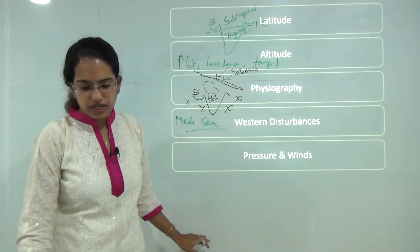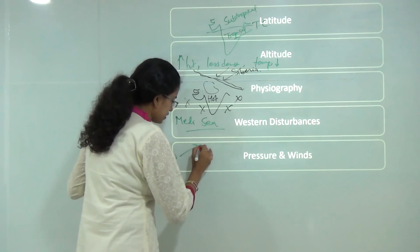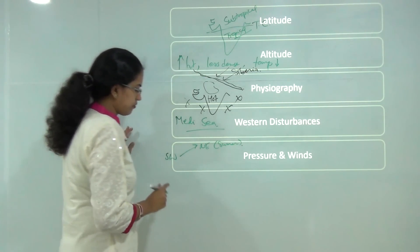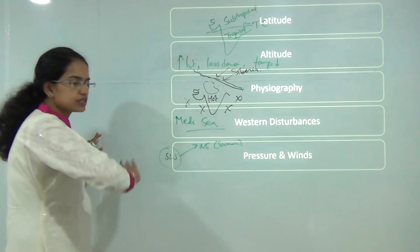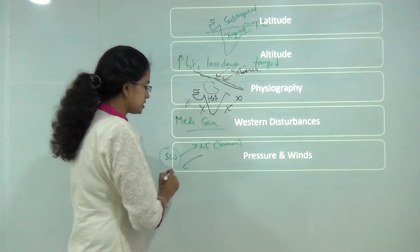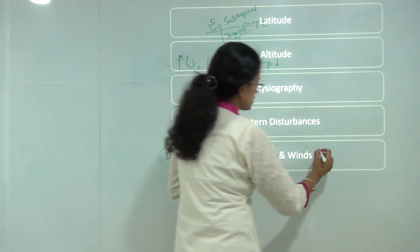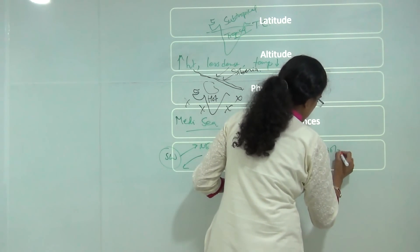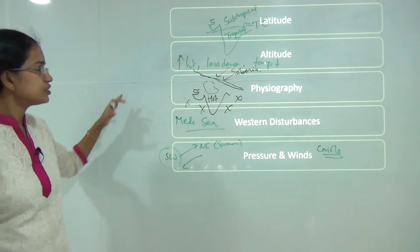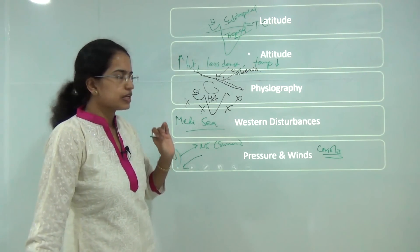The fifth factor is pressure and wind. Wind blows from southwest to northeast in summer, causing rainfall because the southwest winds are moisture-laden. In winter, the reverse happens. Additionally, the Coriolis force affects monsoonal activities. These are the five primary factors that affect the monsoon in India.